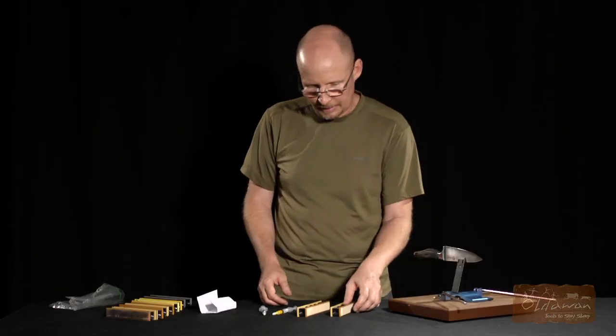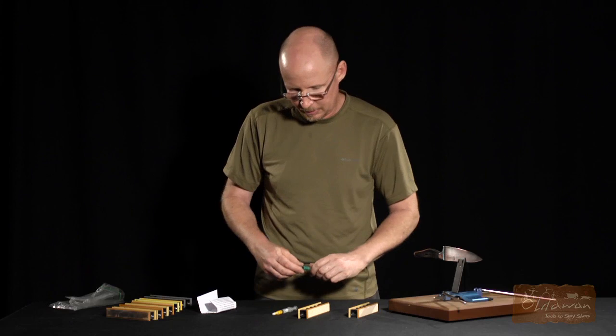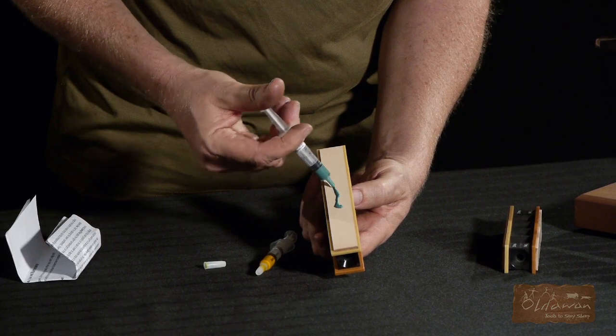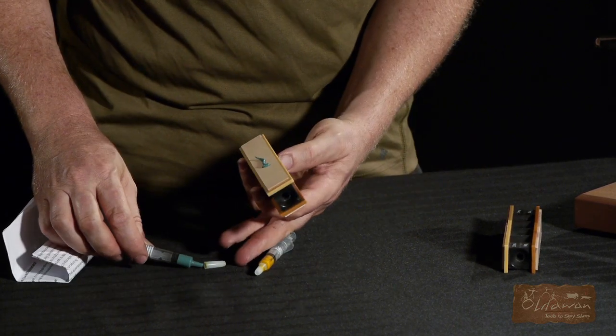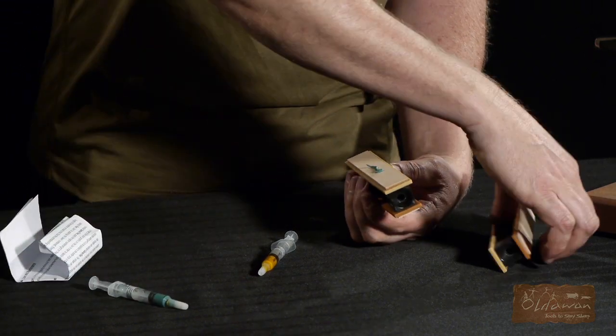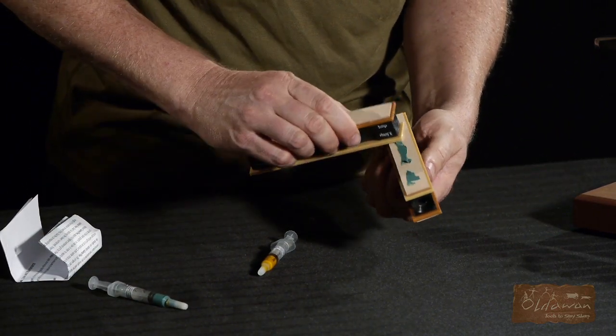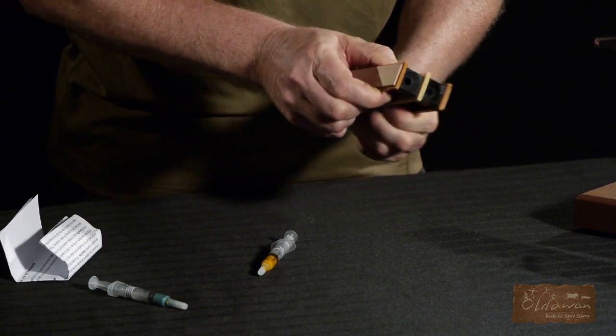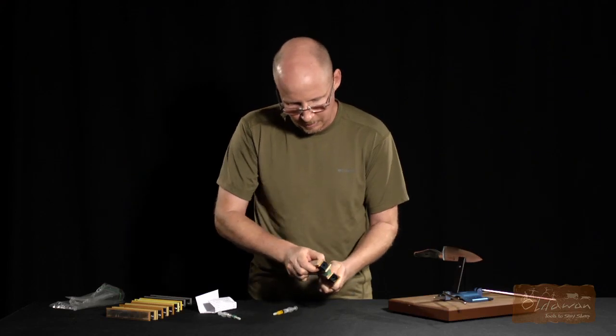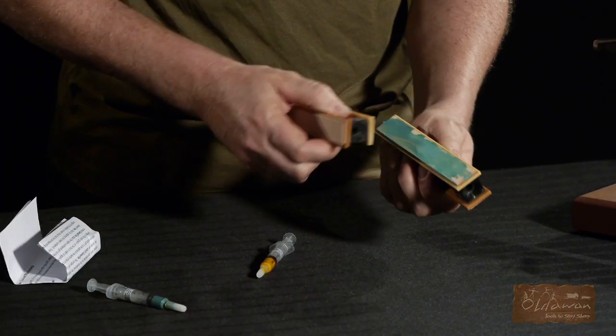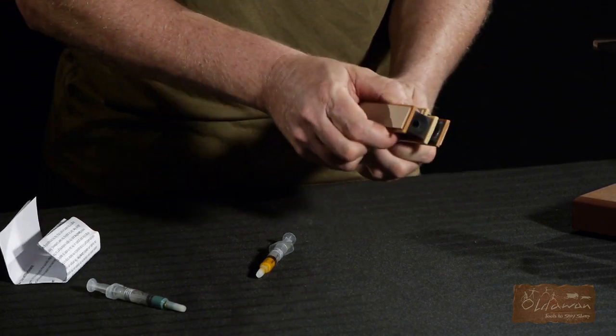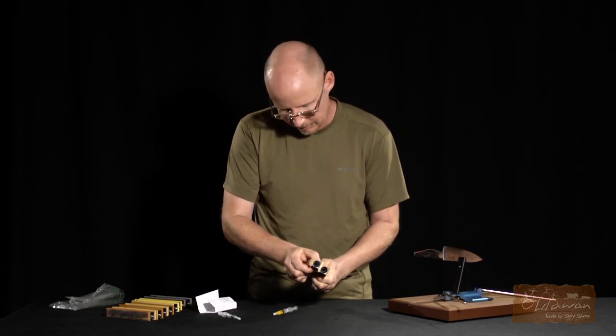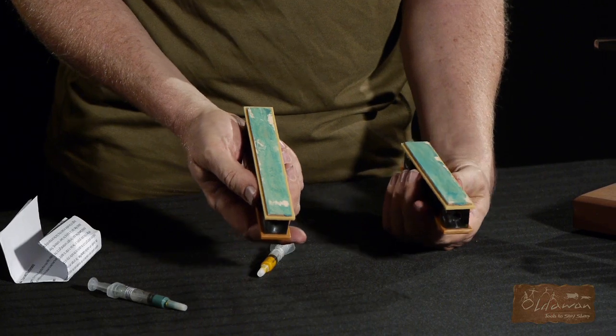When you do your initial application, my particular method for applying is to do one side of the strop and I do a nice inch or inch and a half worth of paste on there. Then I like taking the two strops together to spread this paste out and rubbing them together. You're going to want to avoid any contamination of larger particles, so always protect the strops from getting contaminated. Spread that paste out really nicely and then this one is ready to go.